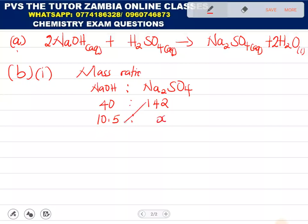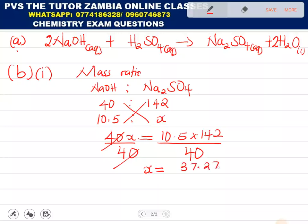Then, you cross multiply. So, we have 40X equal to 10.5 multiplied by 142, over 40. So, we end up getting X. Let's multiply 142 times 10.5, then we divide by 40. It's giving me 37.275 grams. So, that is the mass for sodium sulfate. It's 37.275 grams.